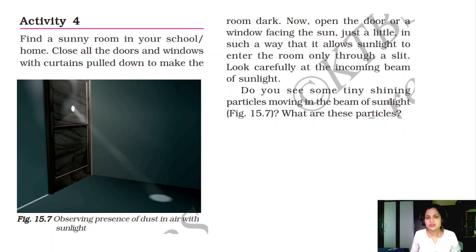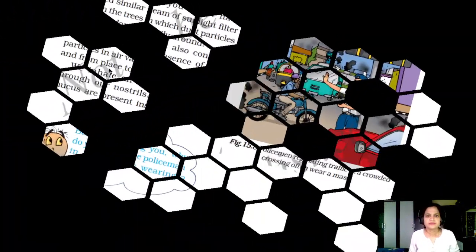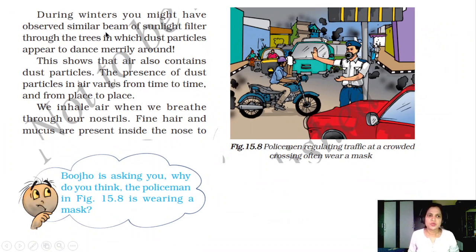Dust is everywhere, even though we don't feel it. Thousands of microorganisms are floating in the air — bacteria and viruses are present everywhere, even on our skin. We don't get infected because our immunity is strong; we fall sick only when our immunity falls down. During winters, you might have observed a similar beam of sunlight filtered through trees, in which dust particles appear to dance. During summer, sunlight passing through tree leaves also lets you observe dust particles. This shows that air contains dust particles, and their presence varies from time to time and place to place.